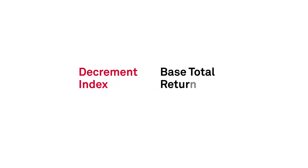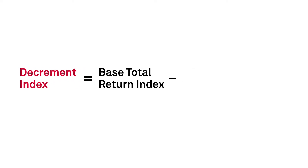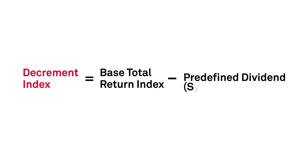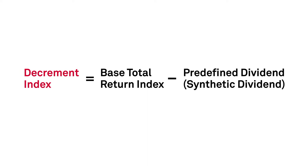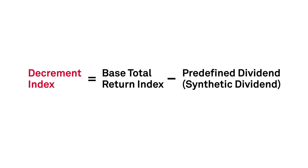A decrement is an overlay applied to a given base index. Very often, the underlying is an equity total return index. A decrement index is constructed by deducting a predefined dividend, also known as a fixed synthetic dividend, at predefined intervals from the total return of its base index.